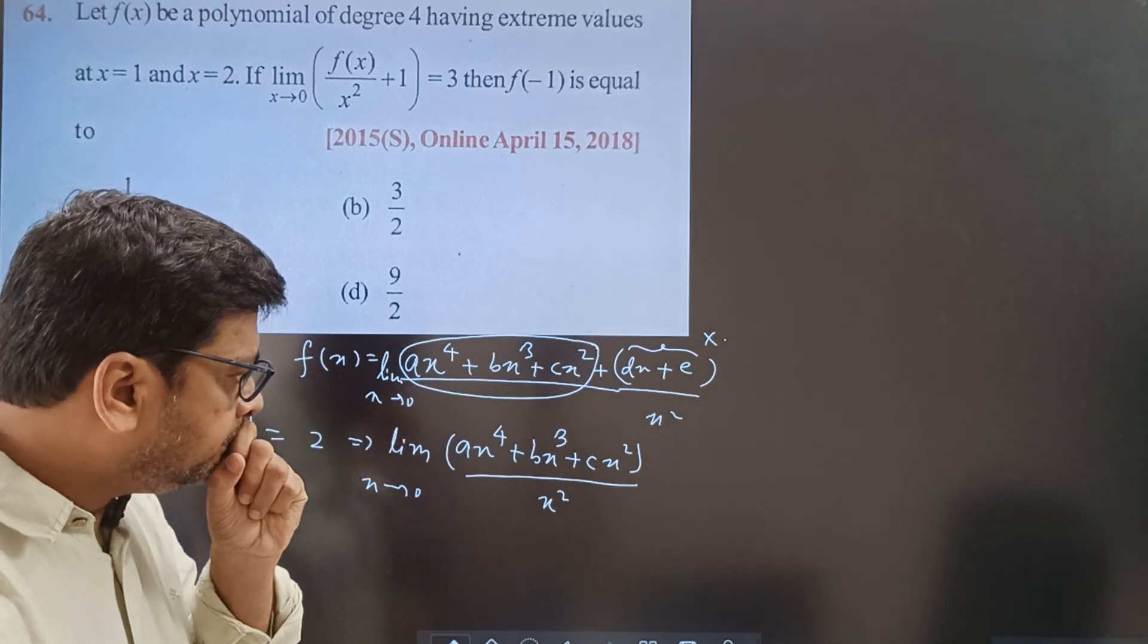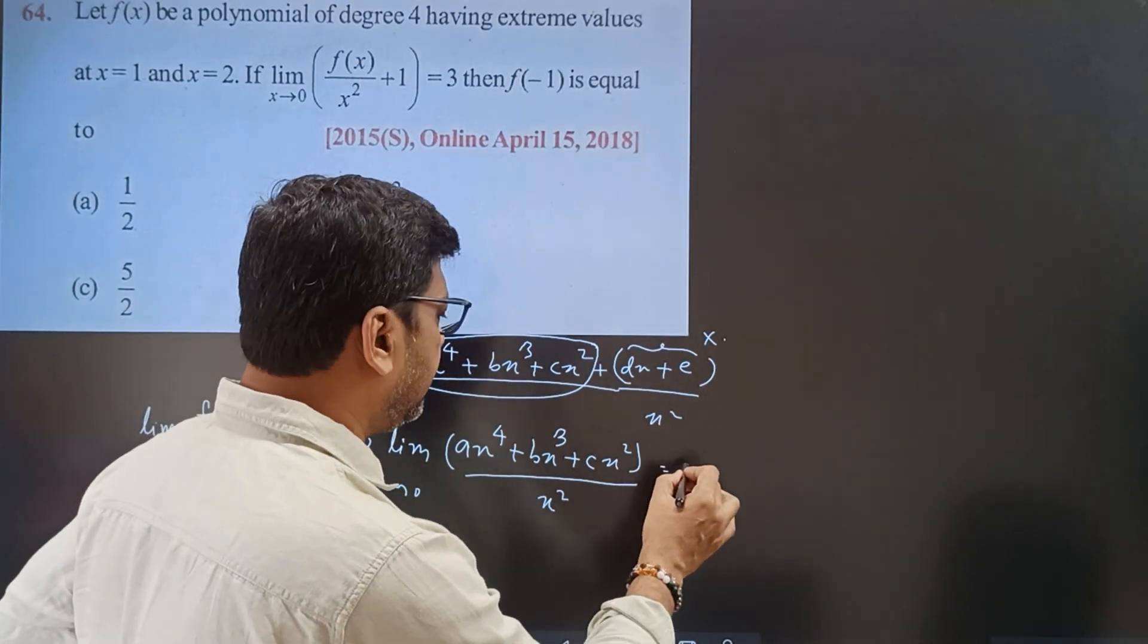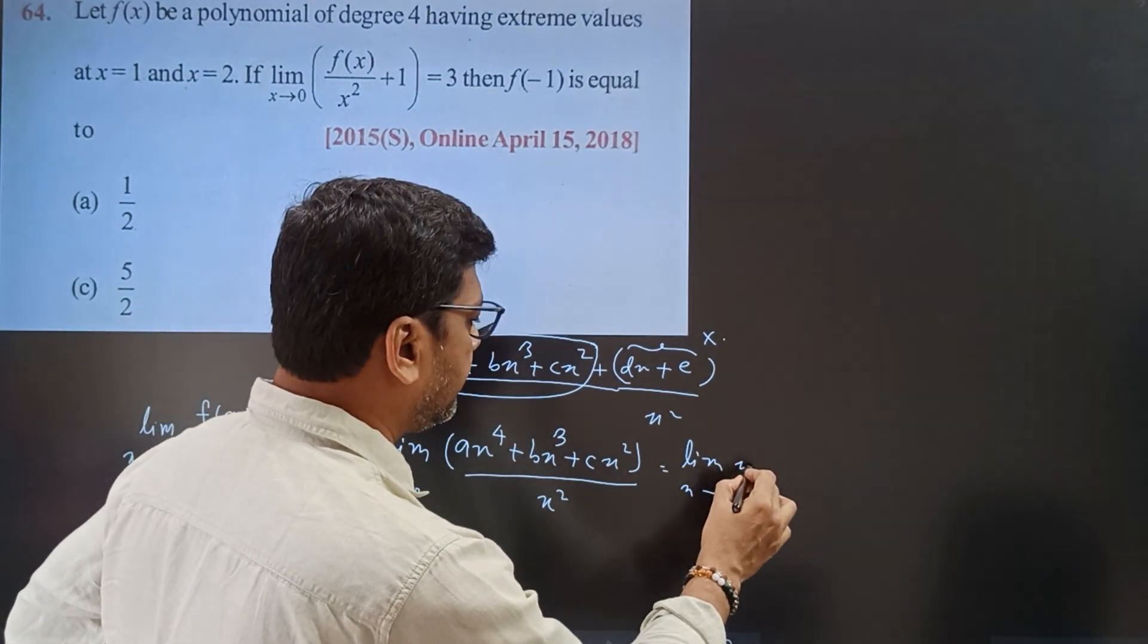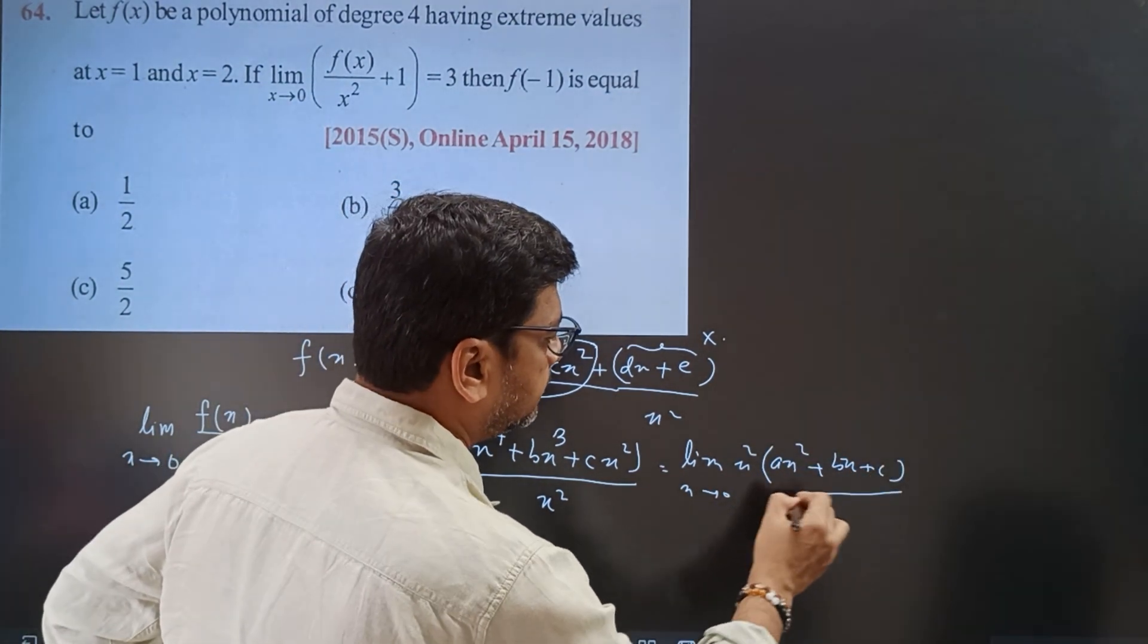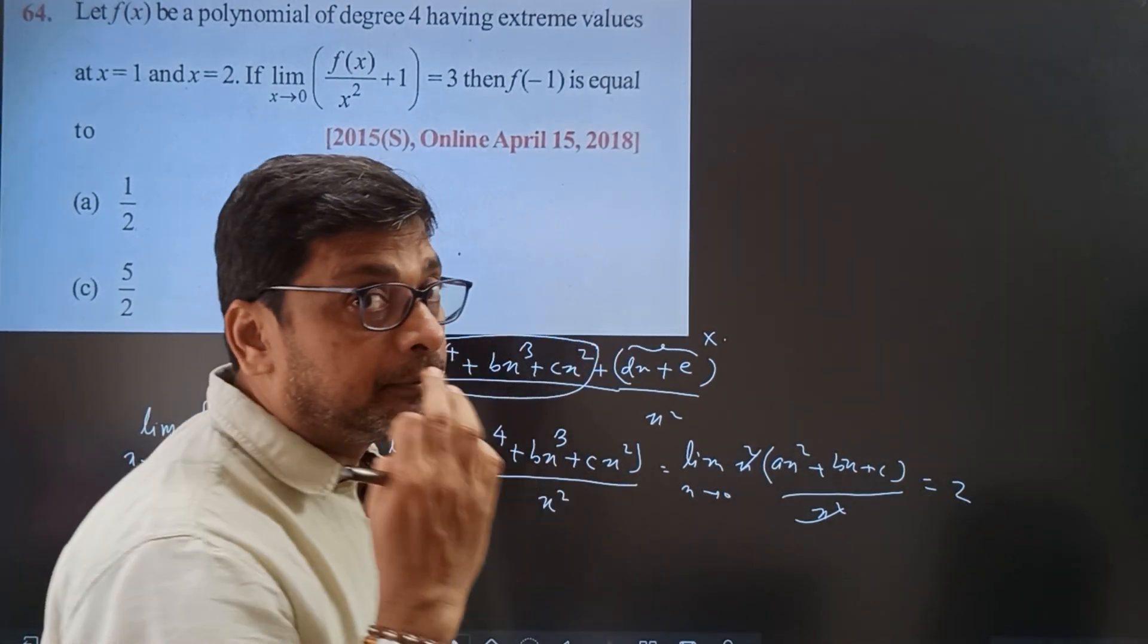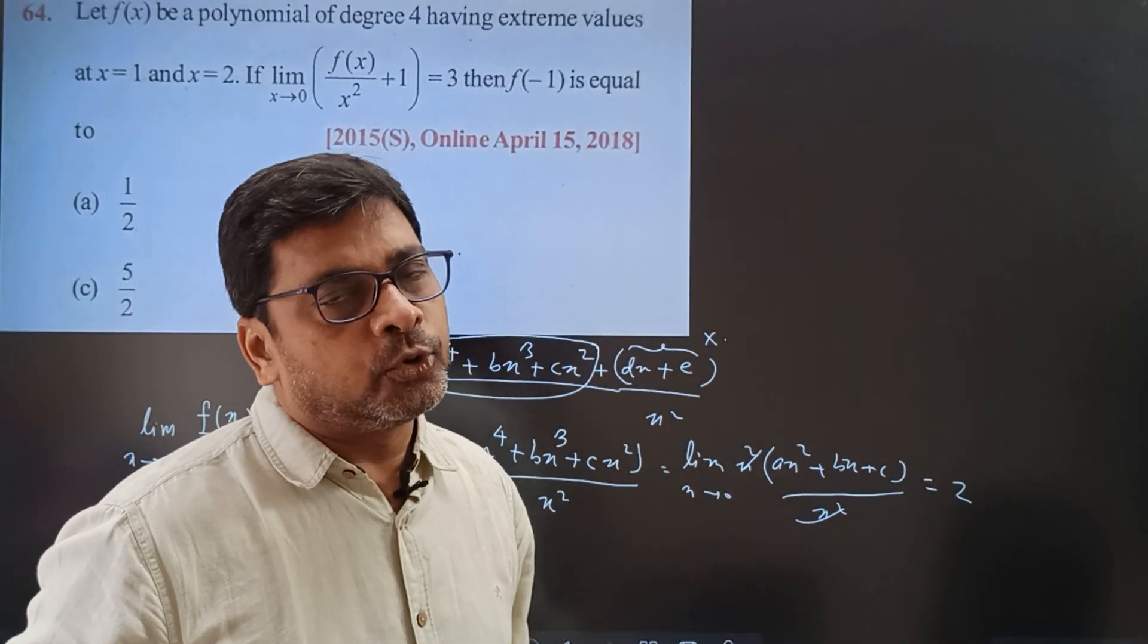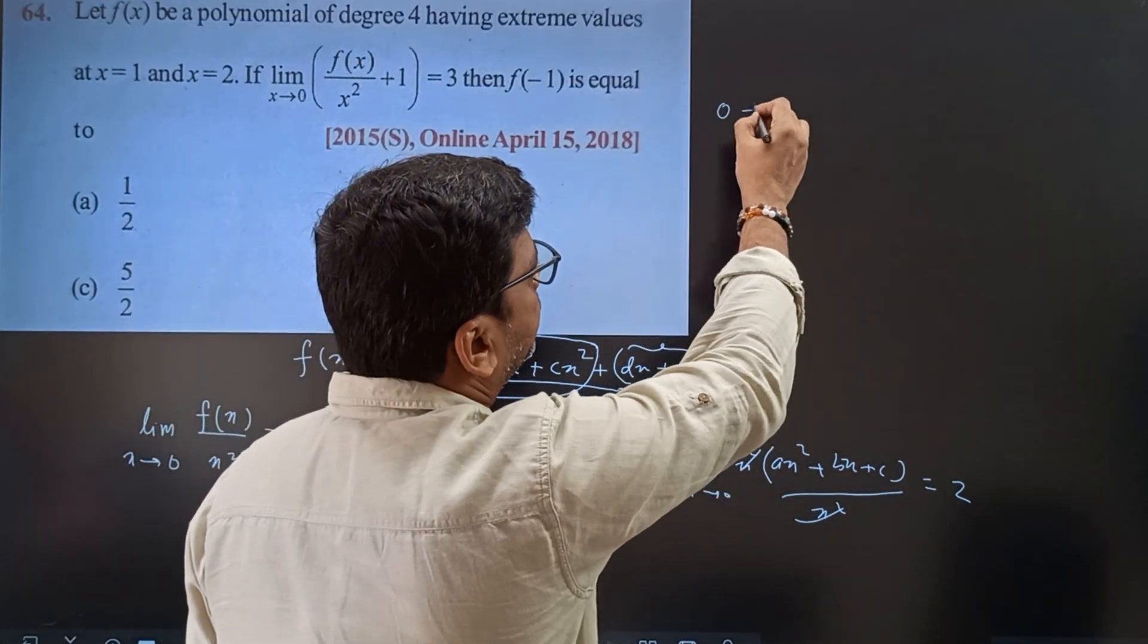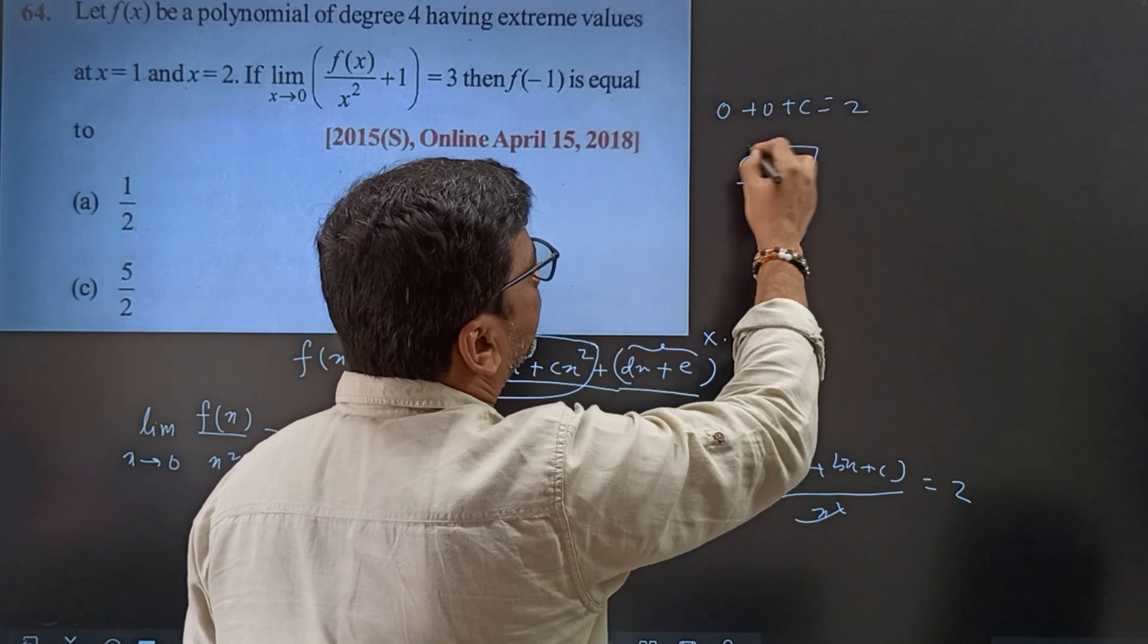Now we will put the limits here. What do we need? x tends to 0, x square common. This whole value is 2, so 2 should be equal to... c is equal to 2.